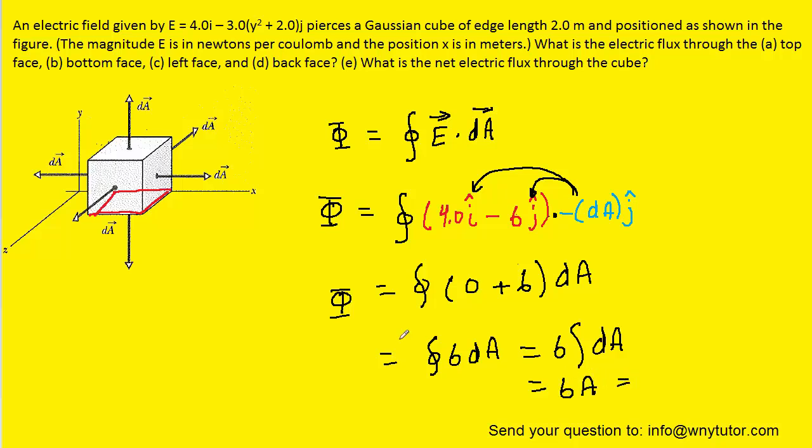Just like before, the area of the bottom face is 2 by 2, or 2 squared. When we finish this one off, we get 24 newton meters squared per coulomb. This is the correct answer to part B.